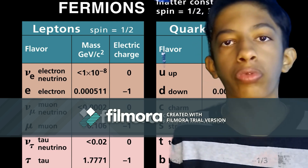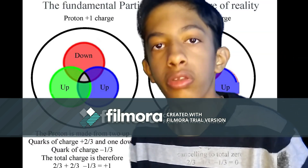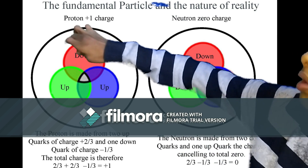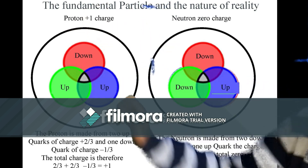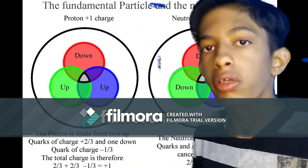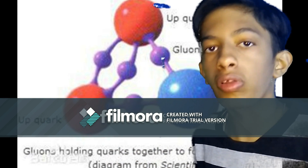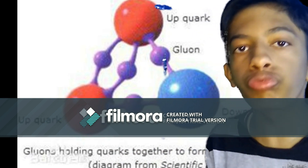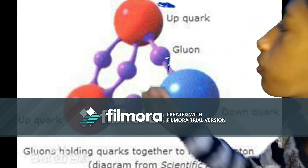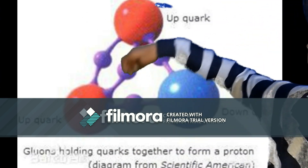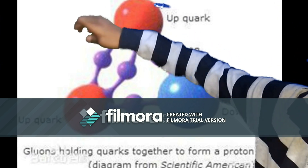Leptons do not belong to the fermions group. Quarks belong to the fermions group, and leptons belong to the leptons group. The force that can bind all three quarks — up, down, charm, and strange — is the gluon force. The gluon force helps to bind the three quarks inside the neutron and proton.